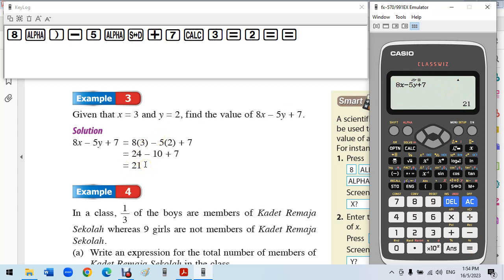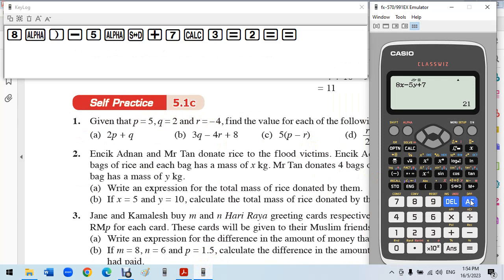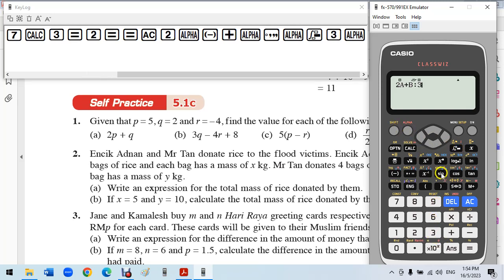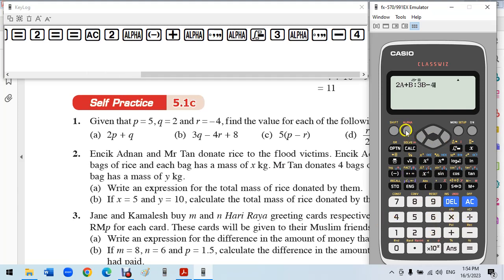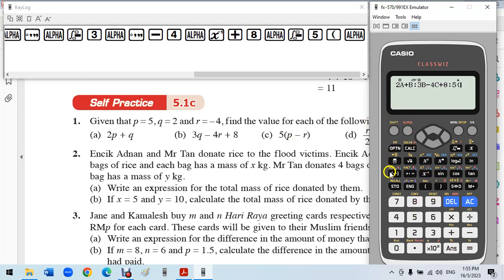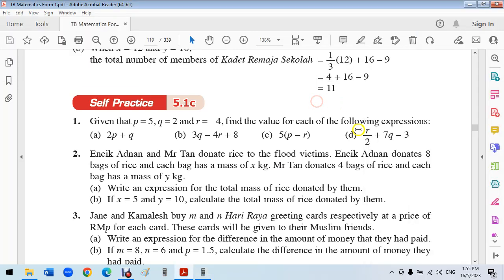For this problem we don't have PQR, we use ABC instead. I have 2 alpha A plus alpha B, P for A, Q for B. Then I can press alpha comma. 3Q, 3 alpha B minus 4 alpha C plus 8. And comma, we have 5 alpha A minus alpha C. And comma again, so we have R over 2.